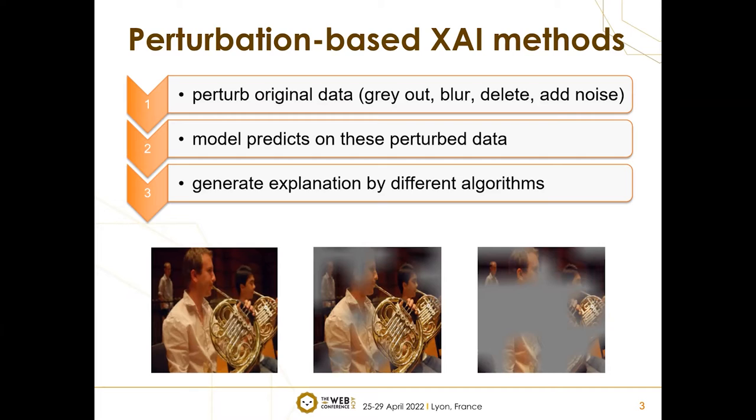However, we found that there exists some unreliability during the process. Imagine if you are asked to classify this picture. Of course, you can easily point out it's about a man playing a hula hoop. How about if there are some parts masked, like the middle one? Probably, you can still recognize it.